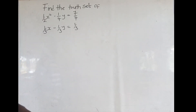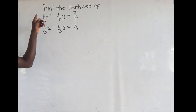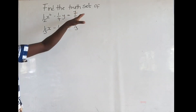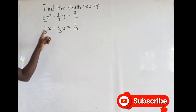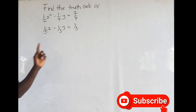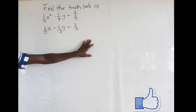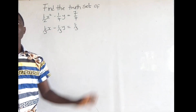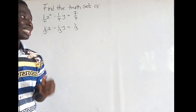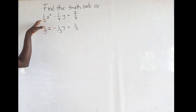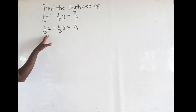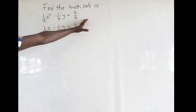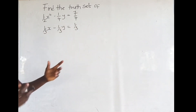Find the two sets of: 1 over 2x squared minus 1 over 4y is equal to 7 over 4, and then 1 over 3x minus 1 over 3y is equal to 1 over 3. This is a simultaneous equation in two variables, and in this case we are having one quadratic and then one linear. Looking at the equations, it is all made up of fractions.